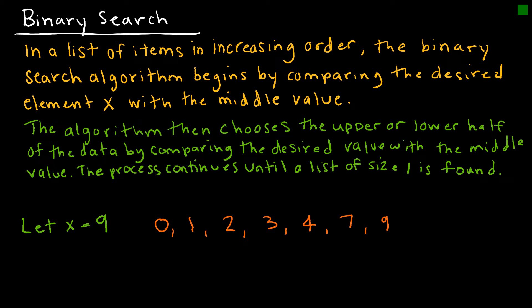Now let's look at the binary search algorithm, which is another search algorithm. The only difference here, or the biggest difference here, is that the list of items must be in increasing order. So it's possible that you might have to do some sort of sorting algorithm first, if you have data that's not in the correct order, and then use the binary search algorithm.